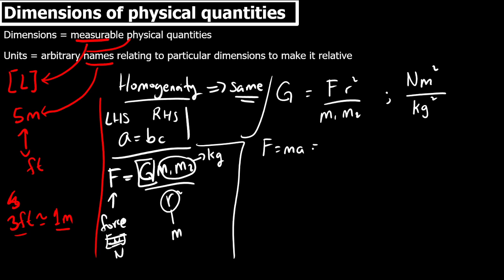So the unit for G will be, let's see, kg m s^-2, and then I have m squared, and then over kg squared. Can cancel those out, and this leads to m cubed...